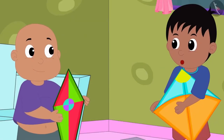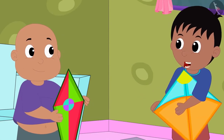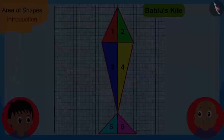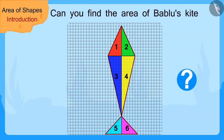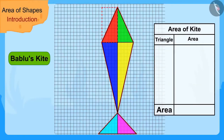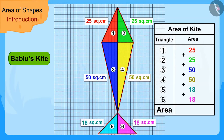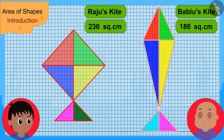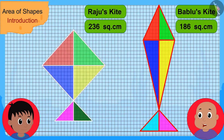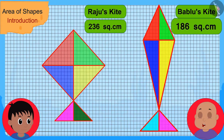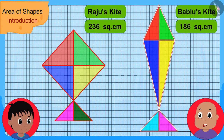Oh wow, Bablu, this is a very easy process. Let me use it now to find the area of your kite. Raju drew such a triangle in the outline of Bablu's kite. Children, can you find the area of Bablu's kite by the process you just learned? We can find the area of Bablu's kite in this way — Bablu's kite has an area of 186 square centimeters. Your kite's area is 236 square centimeters and my kite's area is 186 square centimeters. So your kite is bigger than my kite, Bablu told Raju.